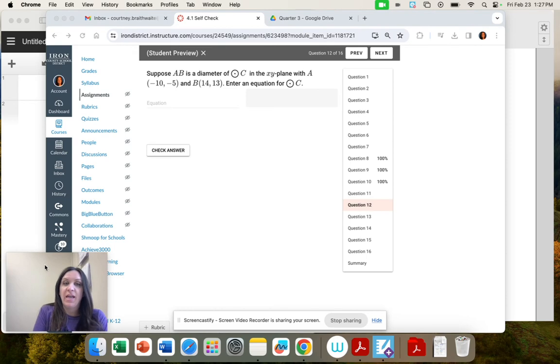Suppose AB is the diameter of circle C in the x-y plane with A at negative 10, negative 5, and B at 14, 13. What's the equation for the circle?